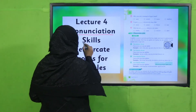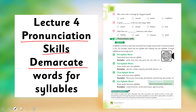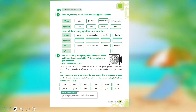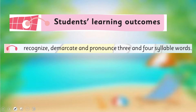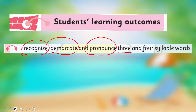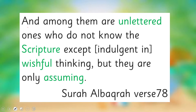I'm going to deliver my lecture according to this lesson plan. Today, under the title of Pronunciation Skills, we are going to learn how to demarcate words for syllables. Before this, I have already taught you how to identify syllables in words. We are going to learn further to recognize, demarcate, and pronounce three and four syllable words. This is our today's SLO. Let's start with the name of Allah Subhanahu Ta'ala.